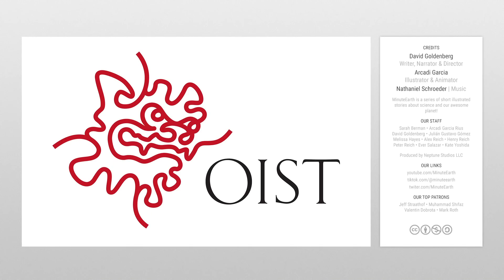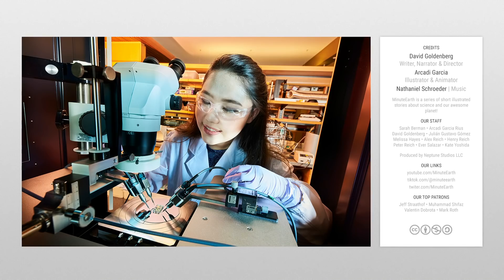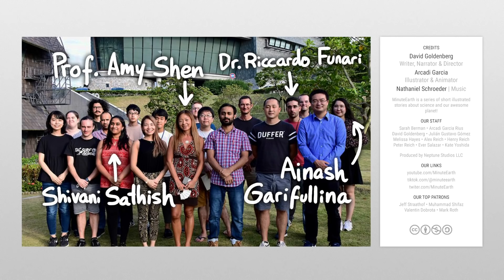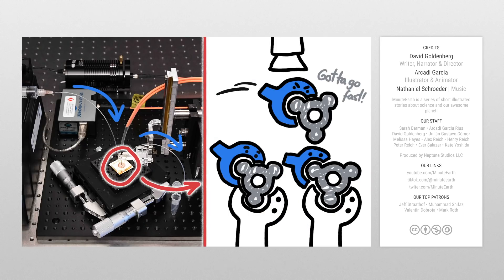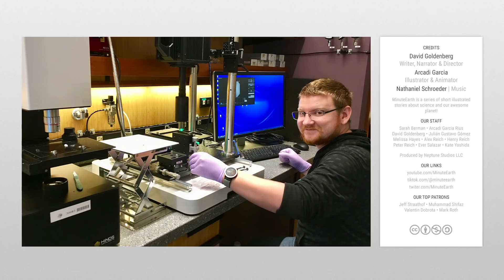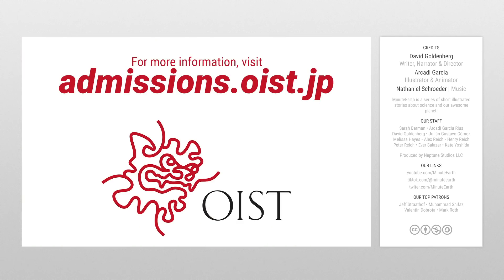Thanks to the Okinawa Institute of Science and Technology Graduate University, an international graduate school devoted to the advancement of science, education, and innovation in Japan and throughout the world. OIST not only sponsored this video, their microbio-nanofluidics lab provided technical expertise. Professor Amy Shen and her team, including grad students Shivani Satish, Ainash Garifurina, and postdoc Ricardo Funari, are currently developing a blood test for COVID antibodies that uses microfluidics to combine the speed of the lateral flow assay with the quantitative nature of more complex optical assays to quickly reveal not only whether you've already had the disease, but how much antibody protection you still have in your body. OIST offers a fully funded PhD program and research internship opportunities that attract talented young scientists from around the world. To learn more about OIST, or maybe even apply, visit admissions.oist.jp.